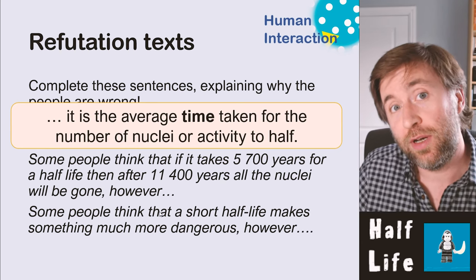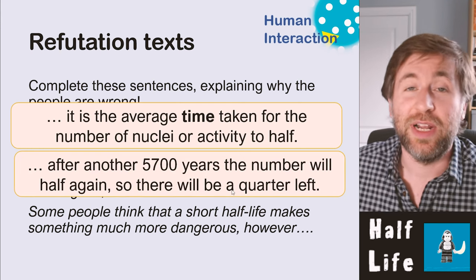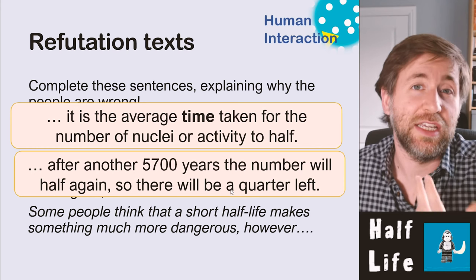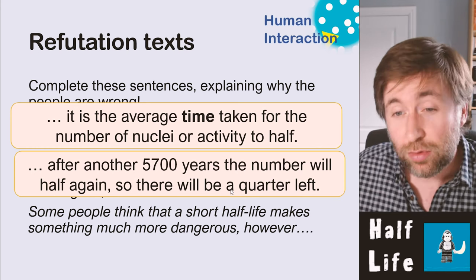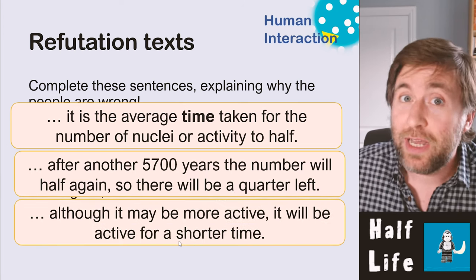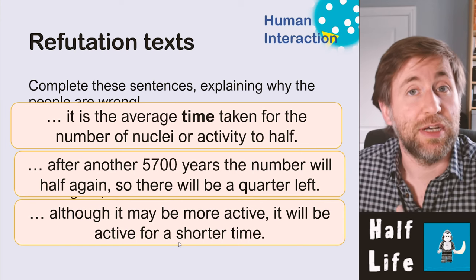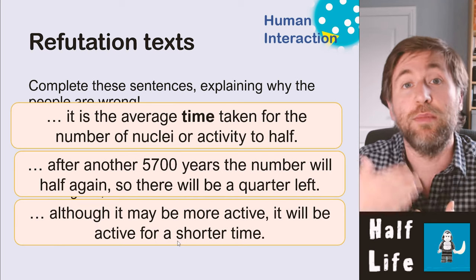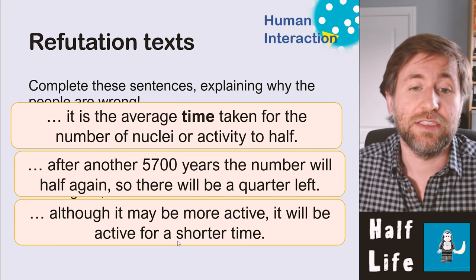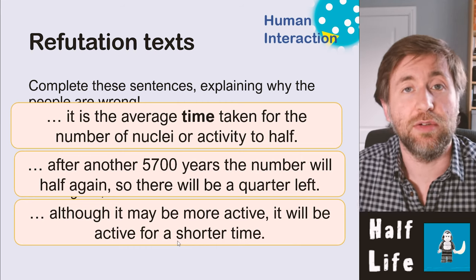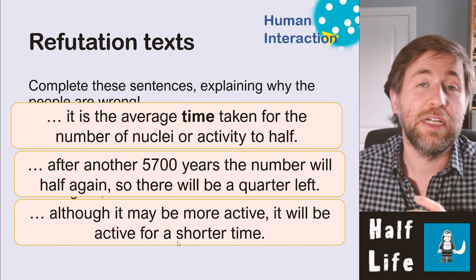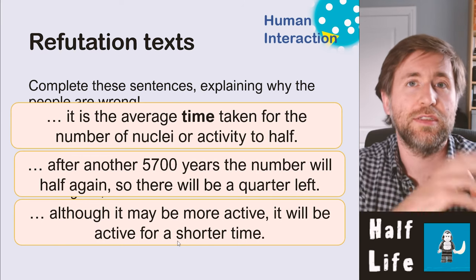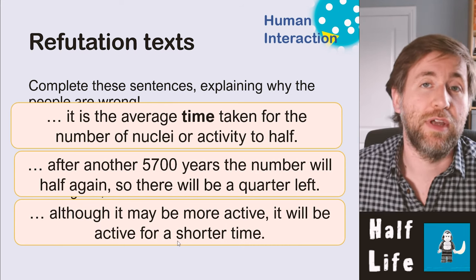After another half-life the number halves again, leaving a quarter — so after two half-lives there's a quarter of the original amount. Some people think a short half-life makes something much more dangerous. However, although a short half-life means a sample is more active — giving out more radiations per second — it will be active for a shorter time. Things with short half-lives are in a way safer because they decay quicker, but you must consider half-life alongside penetration and ionisation power together.